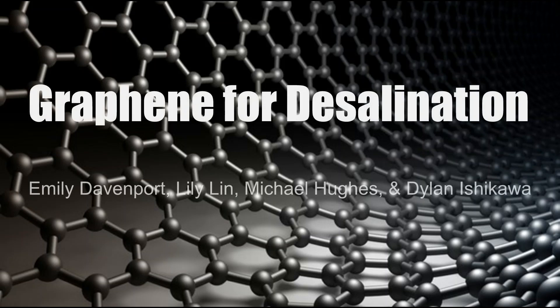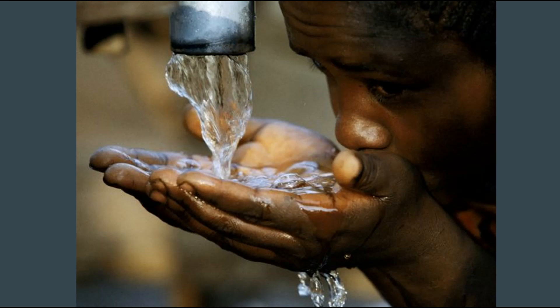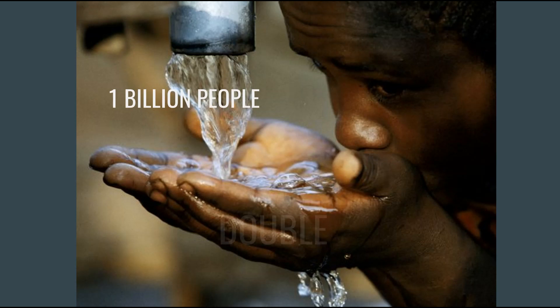In this video, we will be discussing how graphene filters can be used for water desalination. Having access to clean water is a necessity, just like food, clothing, and shelter. Currently, 1 billion people around the world lack access to clean water, a number that is predicted to double in the next 25 years. Some may think this is not a problem in the U.S., but with the recent drought in California, Americans have cause to worry as well.